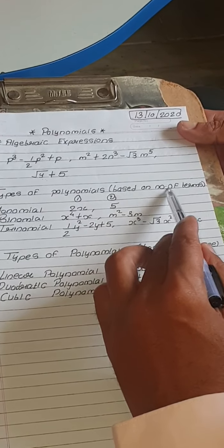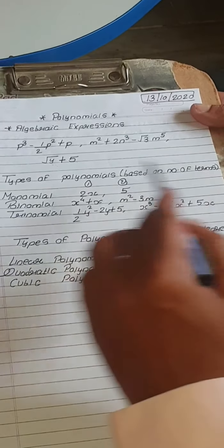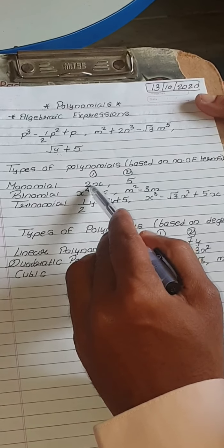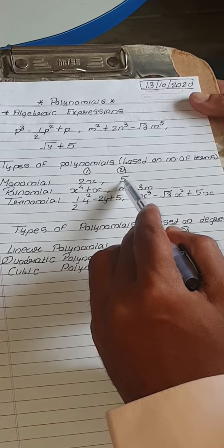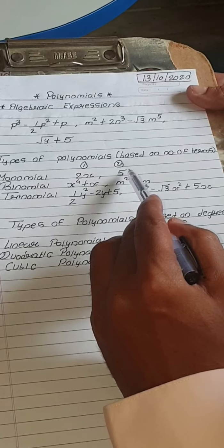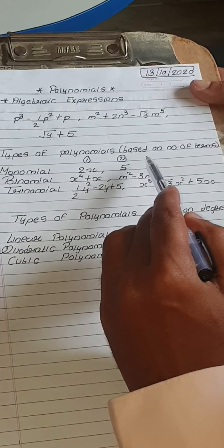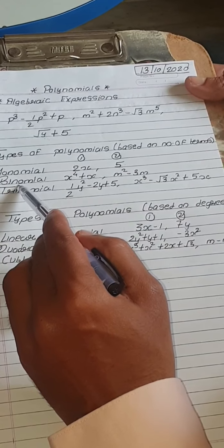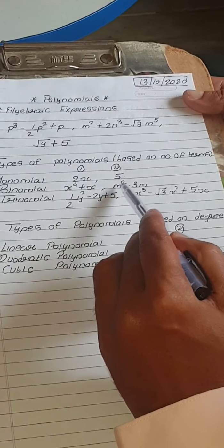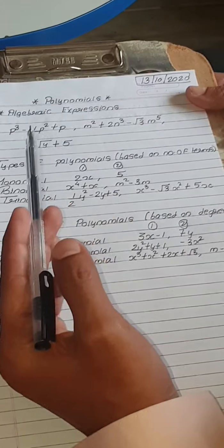First, let's see types of polynomials based on number of terms. Monomial means only one term — for example, 2x, or 5. Students may ask how 5 is a polynomial. Yes, 5 is a polynomial; the degree or power of the variable is 0 because there is no variable. Binomial means two terms — for example, x raised to 4 plus x, or m-squared minus 3m.